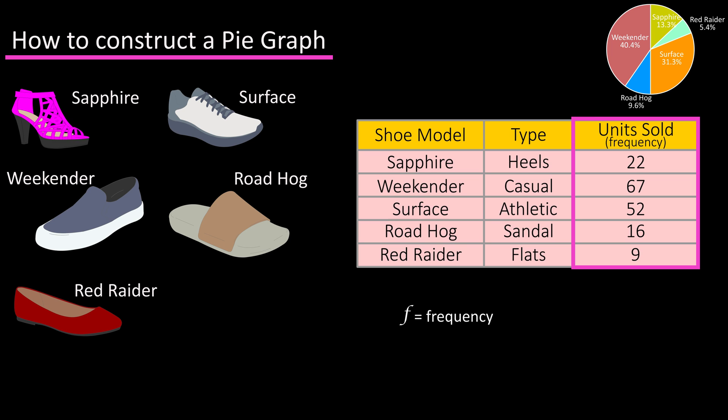Frequency is often labeled as f and we're going to use this later in the video. If we want to construct a pie graph to display the sales data visually, the first thing we need to do is tally up the total number of sales, which equals 166, which is often labeled as n, so n equals 166.